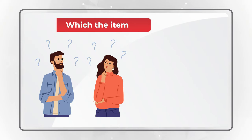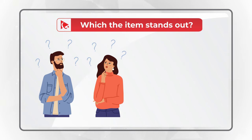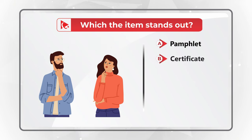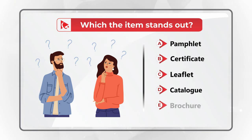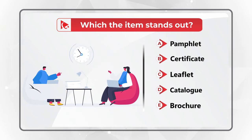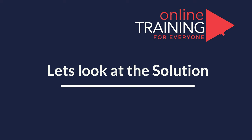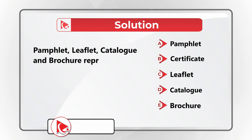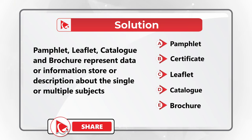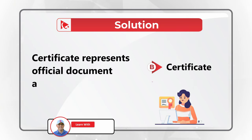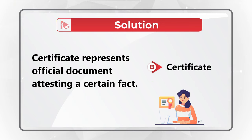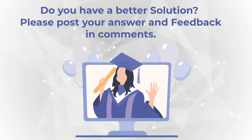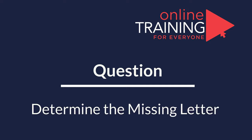Here's an interesting question that tests your knowledge of words and verbal reasoning. You're presented with five words and need to determine which one stands out: pamphlet, certificate, leaflet, catalogue, and brochure. All of these represent information storage or descriptions about single or multiple subjects — with the exception of 'certificate.' A certificate represents an official document attesting to a certain fact.